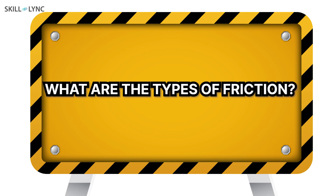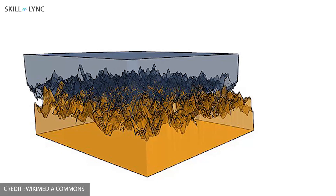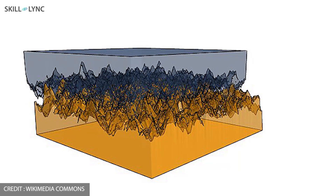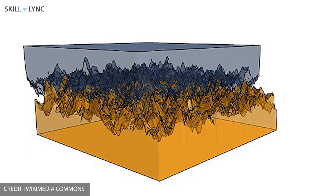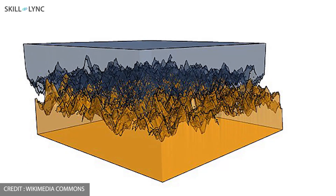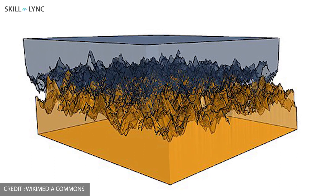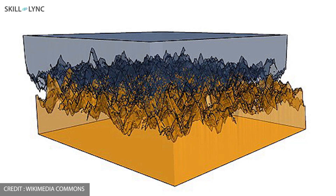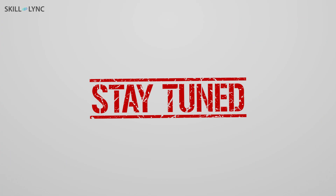Before we dive into how friction works or what the different types are, it would be better if we could learn why friction occurs. We can understand this easily with this illustration. This is a microscopic picture of two surfaces in contact with each other. If you notice closely, there are a lot of ridges on the surface of objects. When the number of ridges is high, the object offers more resistance to movement. When the object has fewer ridges, it offers lower resistance. The value of resistance offered by an object is quantified by the coefficient of friction. We'll be discussing more on this topic in our future videos.